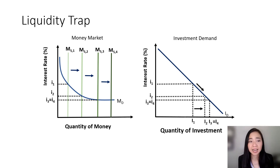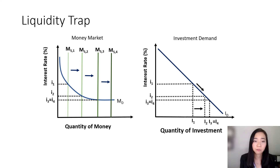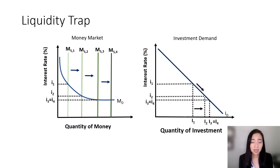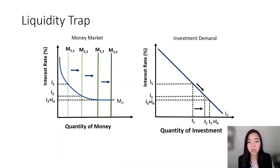Here is a graphical analysis of a liquidity trap. Suppose currently our money supply is MS3 and we're in a recession. Now suppose the Federal Reserve conducts an expansionary monetary policy to increase our money supply from MS3 to MS4. Notice that this increase in money supply does not lower our interest rate. And because the interest rate doesn't go down, investment does not go up, and that will not shift our aggregate demand curve to the right. So our expansionary monetary policy becomes ineffective.